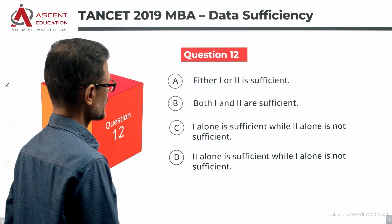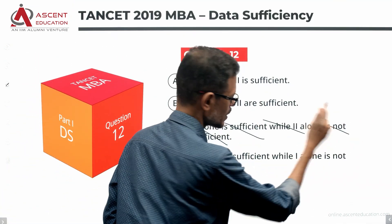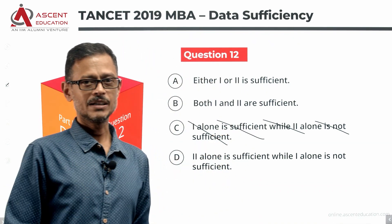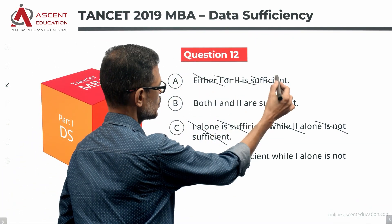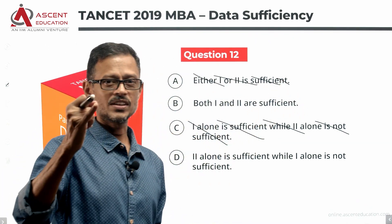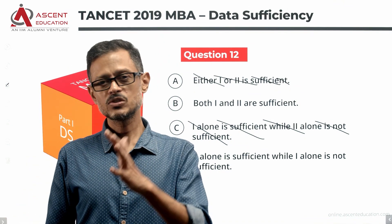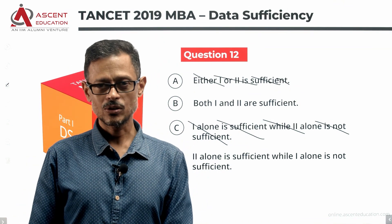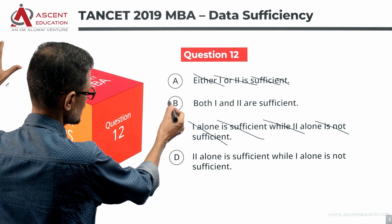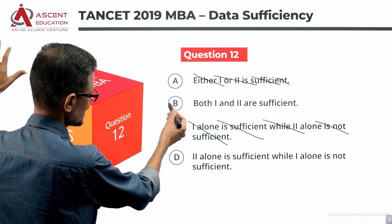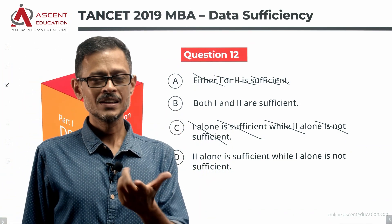So statement one alone is definitely not sufficient. We can eliminate answer options that say one alone is sufficient. We'll also check statement two alone to decide whether to go with A or D. If two alone is also not sufficient, we'll eliminate D as well, and if combining is sufficient, the answer is B.